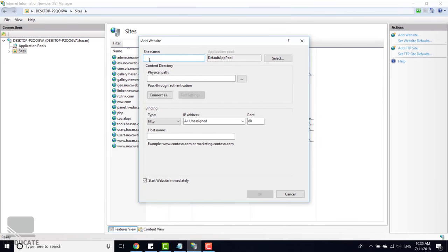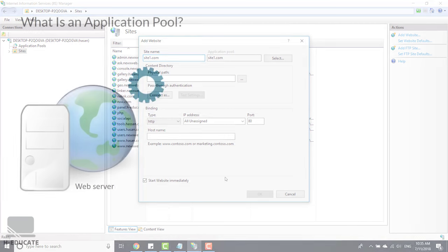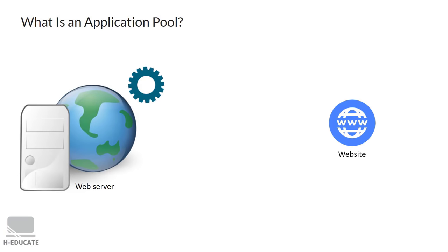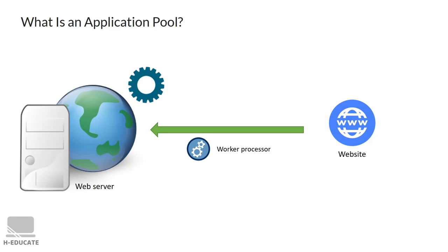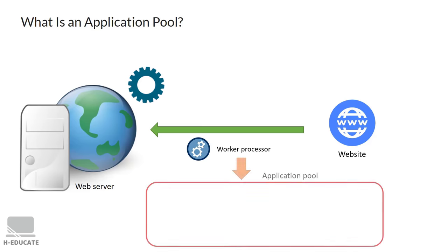When you create a new website in IIS, the wizard automatically creates an application pool for the website. So what is an application pool? Whenever you host a website, its processing and execution are handled by a worker process that is part of the application pool. The application pool is automatically created when you create a website.